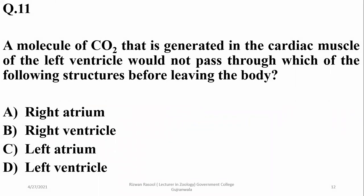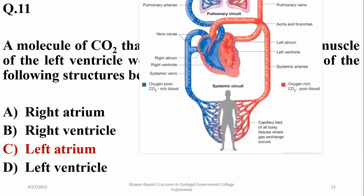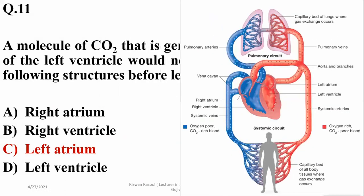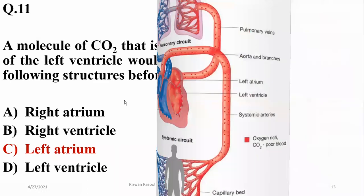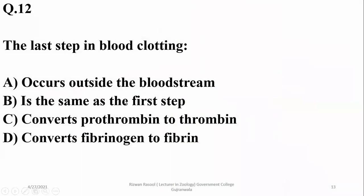A molecule of carbon dioxide gas generated in the cardiac muscle of the left ventricle would not pass through which of the following structures before leaving the body? The answer is the left atrium. Carbon dioxide produced on the right side moves out through the lungs and gets mixed with oxygen to form oxygenated blood. The left atrium receives oxygenated blood, so CO₂ will not pass through it.